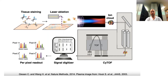Here a laser is used, and the tissue is completely atomized at each spot. Each individual metal in that spot of tissue is then measured in the time-of-flight mass spectrometer. For each laser shot we do one measurement of all the potential metals in that spot, which results in a pixel in the digitally reconstructed image that contains 40 or 50 measurements from the different markers of interest.